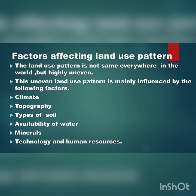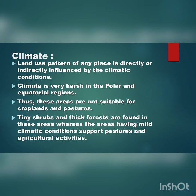These factors include climate, topography, type of soil, availability of water, minerals, technology and human resource. First is climate. Land use pattern of any place is directly or indirectly influenced by the climatic conditions. Climate is very harsh in the polar and equatorial regions; thus these areas are not suitable for croplands and pastures. Tiny shrubs and thick forests are found in these areas, whereas areas having mild climate conditions support pasture and agricultural activities.